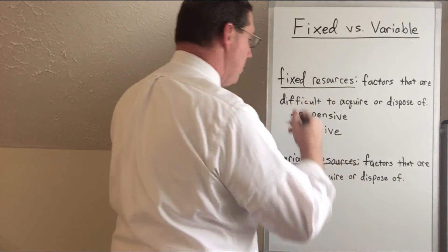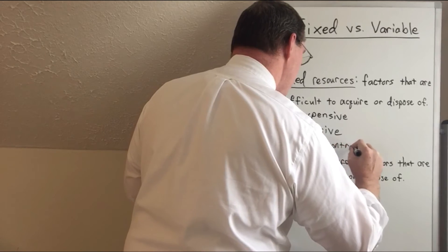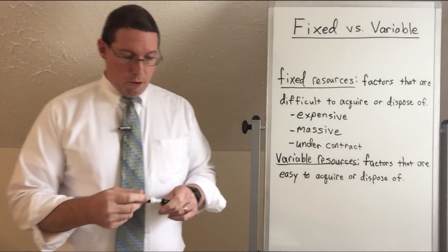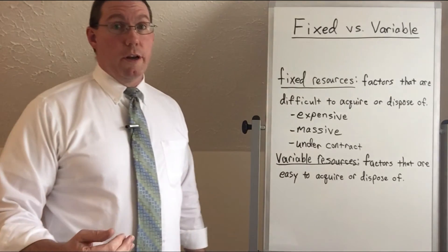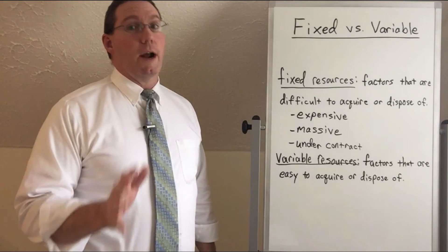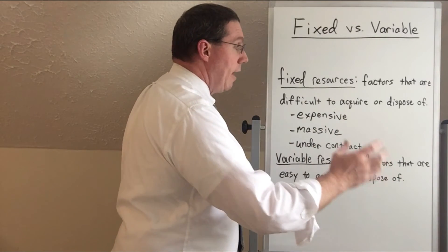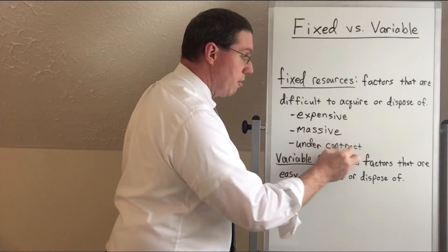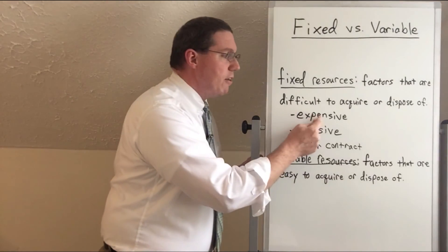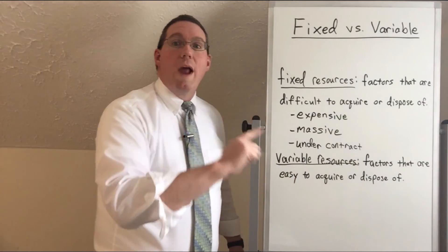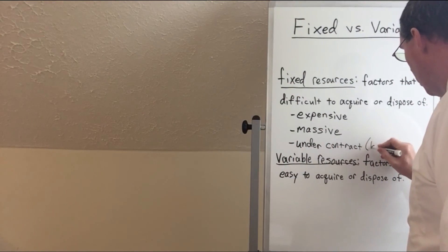And then the third reason that resources might be fixed is because they are under contract. I said previously that it's easy to get rid of employees, right? Now, when I say get rid of, meaning fire employees. Unless that employee is under contract. If you have signed a contract, for example, with a labor union for five years, you can't get rid of those employees. You are under contract to employ those workers until that contract is up. And so it is difficult to fire people. And also it's difficult to acquire those people because they require that they have to be under contract. And that's why nowadays, what a lot of businesses will do is instead of buying their own expensive resources, they will rent them short term. So when I say under contract, I mean long term. Under contract, long term.